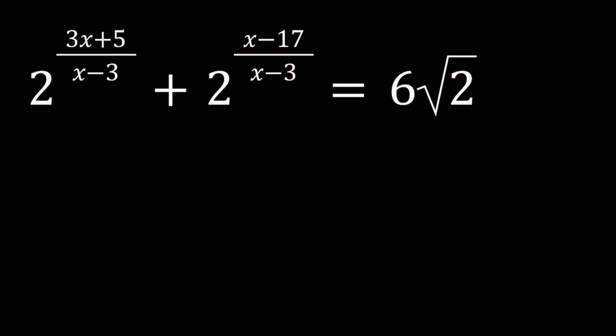Hello everyone. In this video we're going to be solving a nice exponential equation from Romania. We have 2 to the power (3x+5)/(x-3) plus 2 to the power (x-17)/(x-3), and the sum is equal to 6 times the square root of 2. We're going to be solving for x values, and I'll also show you a graph that explains the solutions at the end.